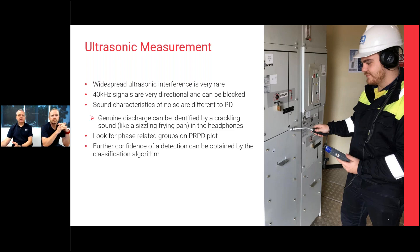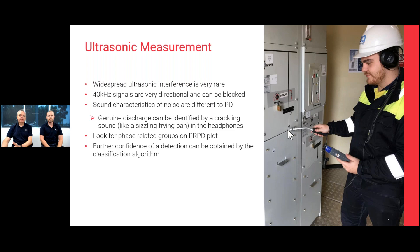40 kHz signals are very directional and won't travel around corners — they can be blocked. If there is ultrasonic noise from, say, a light fitting above in the roof, you can shield the microphone from that direction using a clipboard or similar. Pointing the microphone towards the switchgear will detect surface discharge, and turning it away stops hearing that source. Background interference with ultrasonic is a pretty rare occurrence.